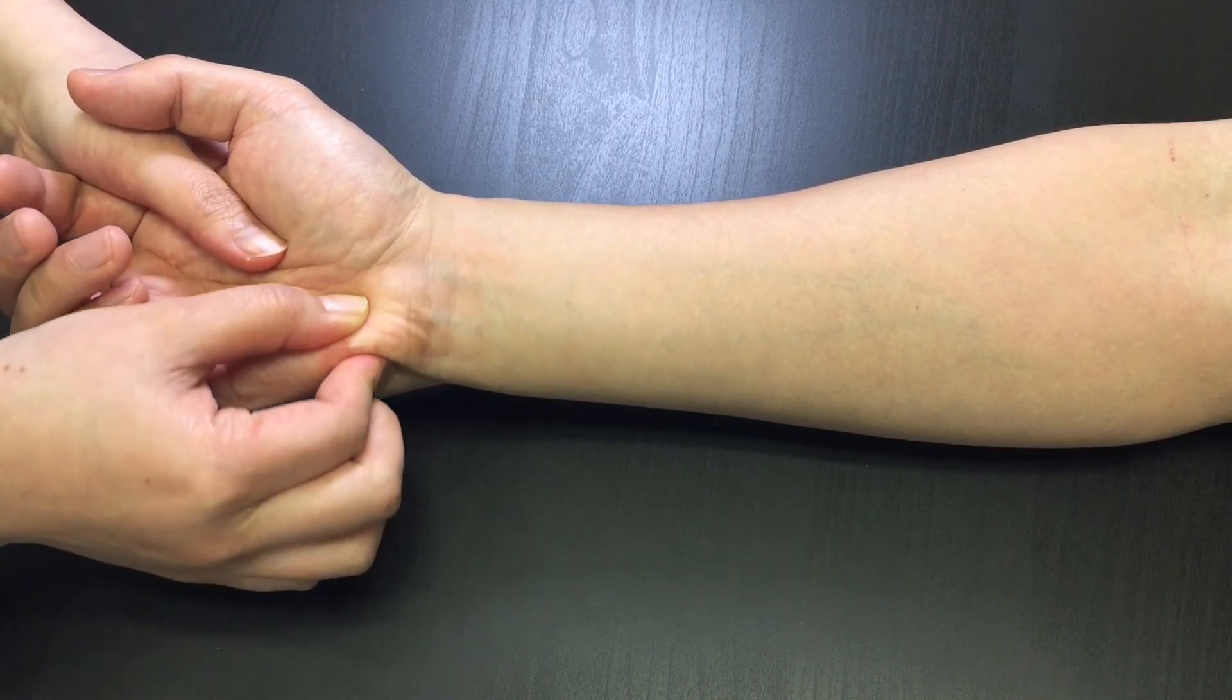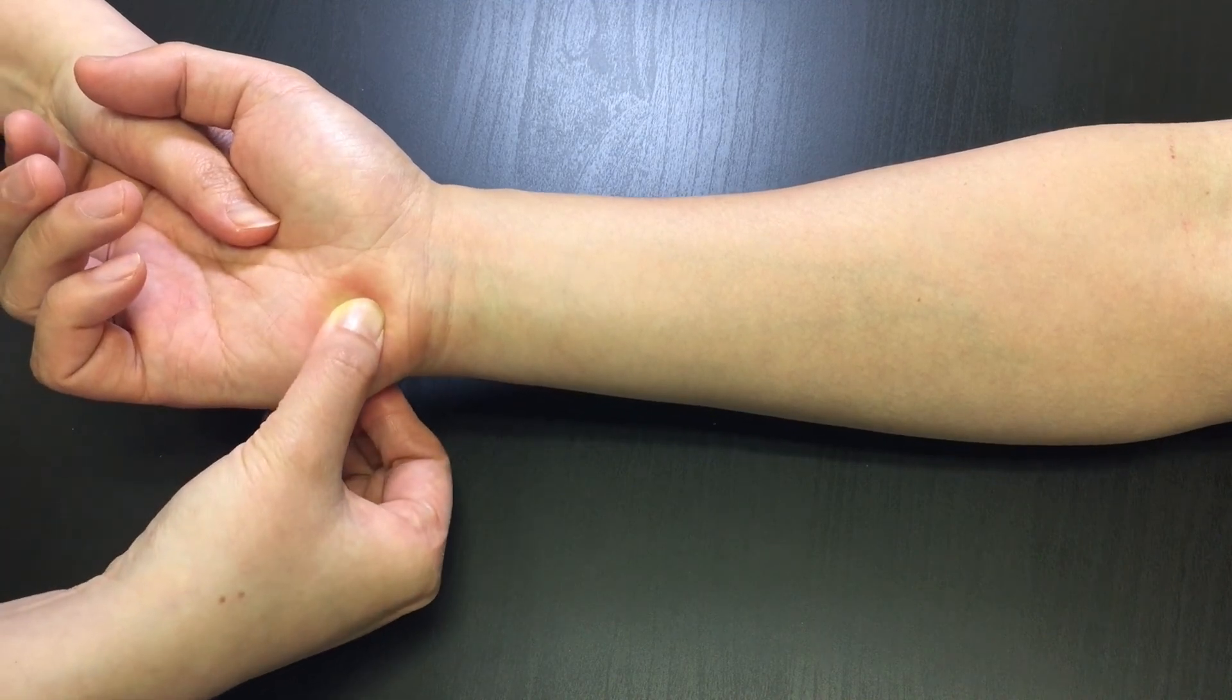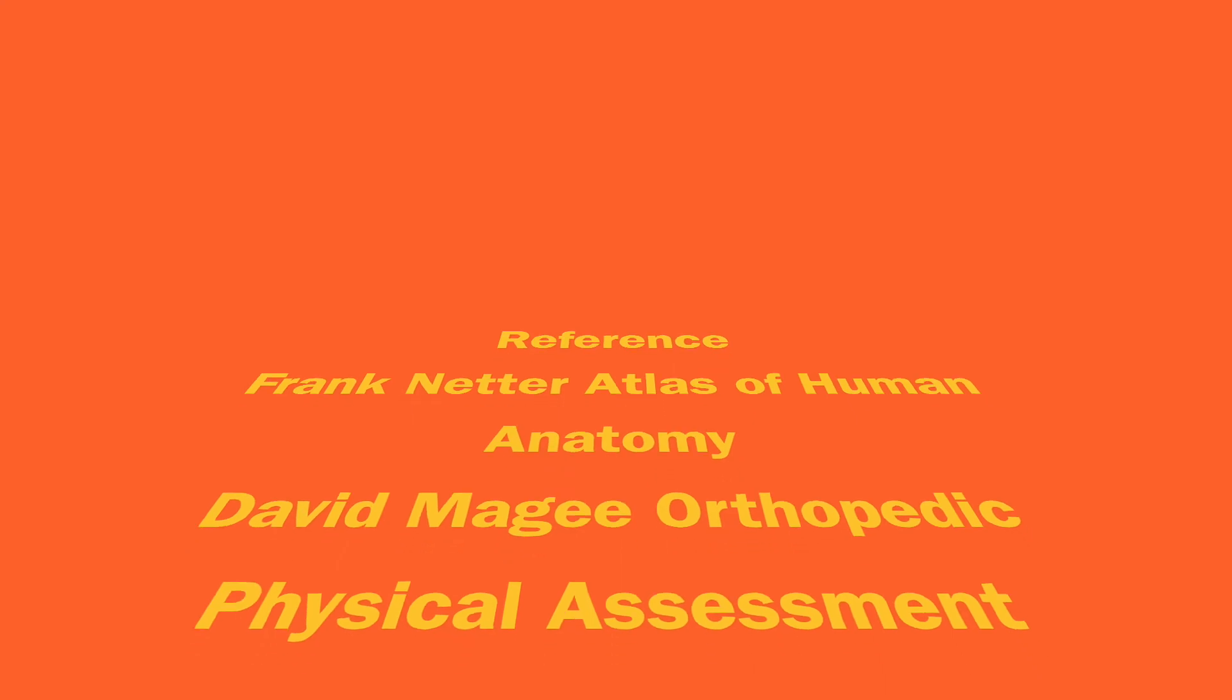After locating the hook of hamate, palpate its medial and dorsal side. This is it for the palpation of the bony landmarks on hand. Thank you for watching.